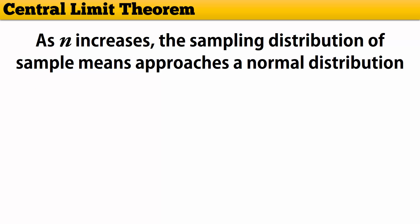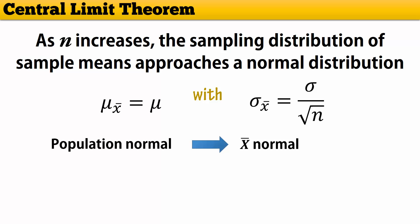Now we have the central limit theorem, which basically says that as the sample size increases, the sampling distribution of the sample means will approach a normal distribution. That is, if the population is normal, then the distribution of sample means will also be normal. And if the population is not normal, the distribution of sample means becomes approximately normal when n is large.